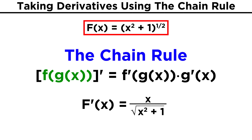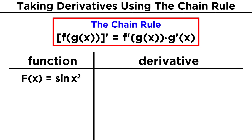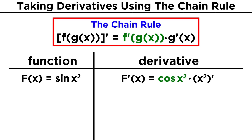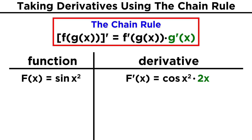So with the chain rule, when we have multiple functions happening at once, we differentiate the outer function first as it operates on the inner function, keeping the inner function the same, and then we multiply by the derivative of the inner function. Let's try a few more for practice. Say we want to get the derivative of sine of x squared. We can clearly see that here there are two functions operating on x. The outer function is sine, and the inner function is this exponent. So let's apply the chain rule. The derivative of sine is cosine, so we get cosine x squared. But then we have to multiply by the derivative of the inner function, x squared, which gives us two x, so we get two x cosine x squared.